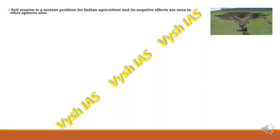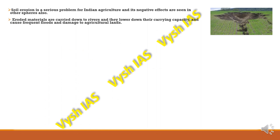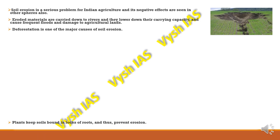Soil erosion is a serious problem for Indian agriculture and has negative effects on vegetation, wildlife, and other things heavily dependent on soil. Eroded material carried to rivers lowers their carrying capacity and causes frequent floods and damage to agricultural lands. Deforestation is one of the major causes of soil erosion. When trees are cut, roots become weak and die, loosening the soil so it easily gets washed or blown away.